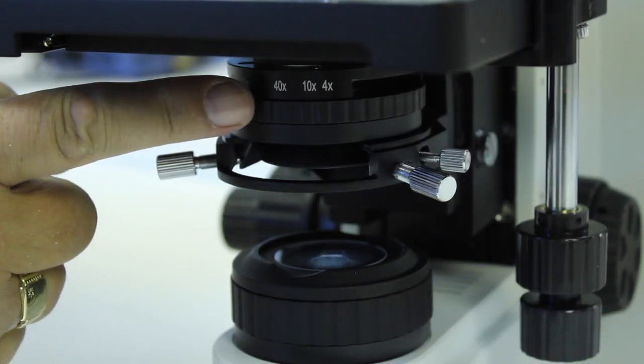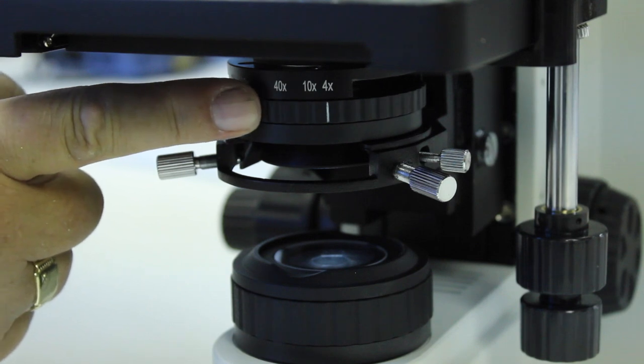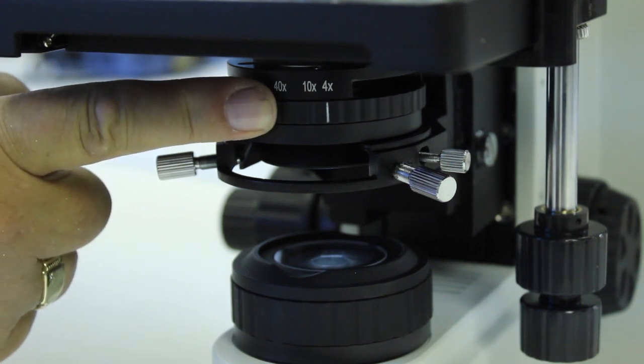The next step is to fully close the sub-stage iris all the way over until it is just on the x4 mark.